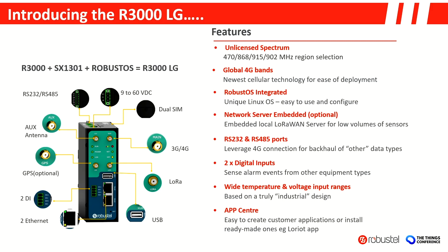To put context to this presentation, I want to share a little of the history of the products we're describing today. The R3000 LG is a classic light industrial grade indoor router slash gateway. Its history as a router spans six to seven years in Robustel's portfolio, and it was about three or four years ago that the addition of an SX1301 — the Semtech eight-channel chip — running RobustOS, the operating system we'll come to shortly, gives you the R3000 LG.